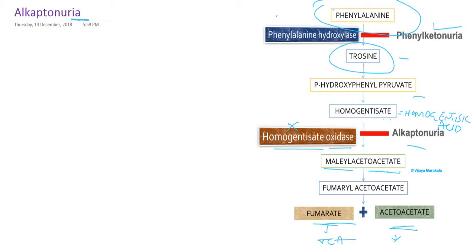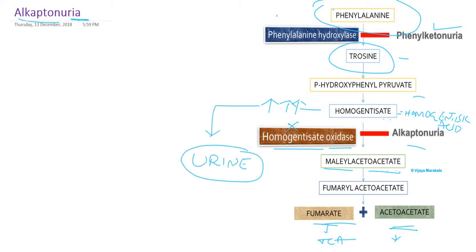Such children we call them alkaptonuric. Homogentisic acid or homogentisate will accumulate in the blood and start appearing in the urine. Alkaptonuria is an inborn error of protein metabolism due to deficiency of homogentisic acid oxidase, or homogentisate oxidase. This is the enzyme deficiency, and homogentisate starts appearing in the urine.